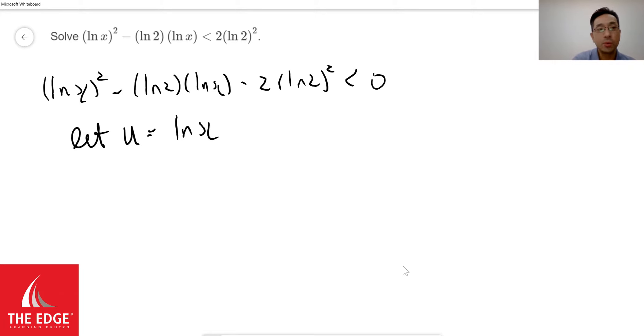If we do that, then we will have this new equation, which is u squared minus ln of 2 times u minus 2 times ln of 2 squared must be less than zero.